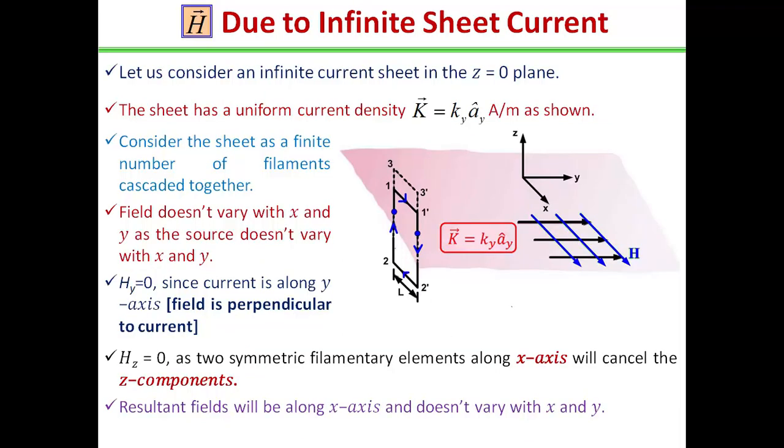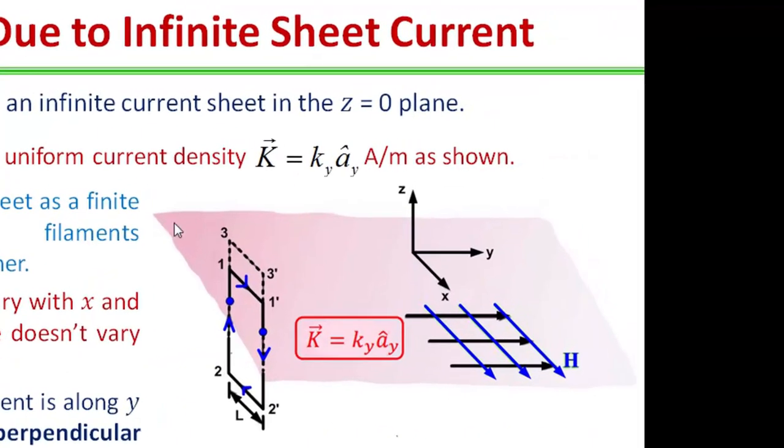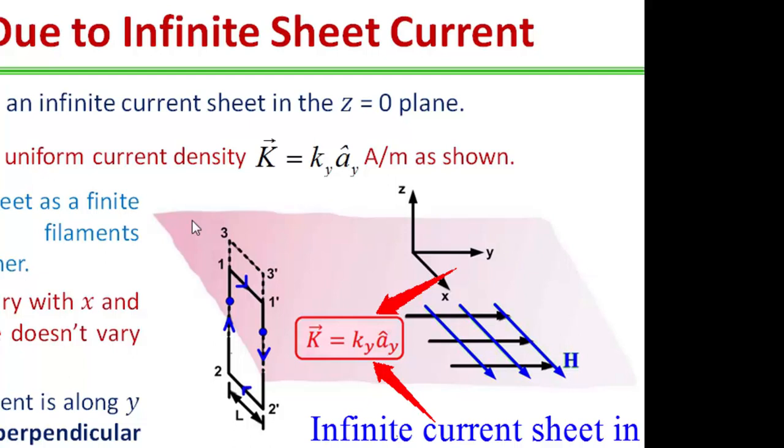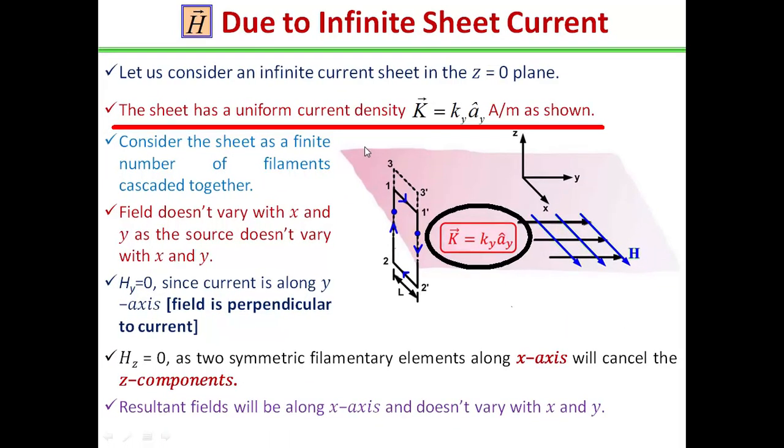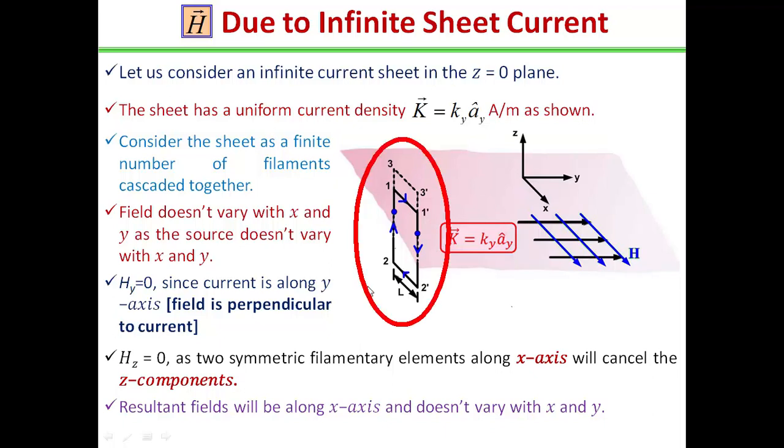Now I will discuss the magnetic field intensity due to the infinite sheet current. Look at this figure. Consider an infinite current sheet in the z equals 0 plane, that means in xy plane. The sheet has a uniform current density vector K is equal to K_y a_y ampere per meter. As shown in the figure, so first take a path 1-1'-2'-2-1, that is Amperian path in this case.